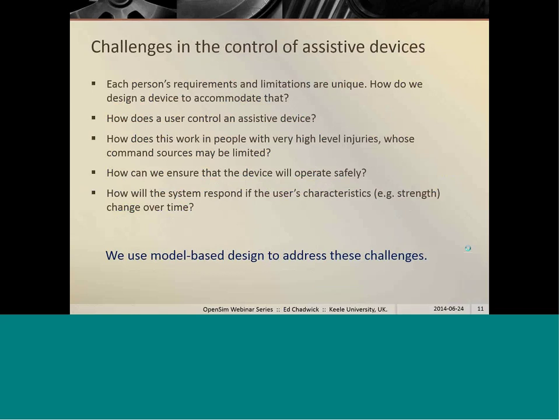The exact level of force available from each muscle obviously varies from person to person depending on the size of their muscles and so on. So there's a big diverse set of requirements for the device. The control or command issues are significant as well. So voluntary EMG is one option. We could use other things like a brain-computer interface or eye tracking. In particular for people who are very high level, how do we deal with that? How do we ensure that the device will be safe? How does the system adapt if the user's characteristics change over time? So for example, their muscles may get stronger through repeated use or indeed they may fatigue. So we use model-based design to address these challenges.